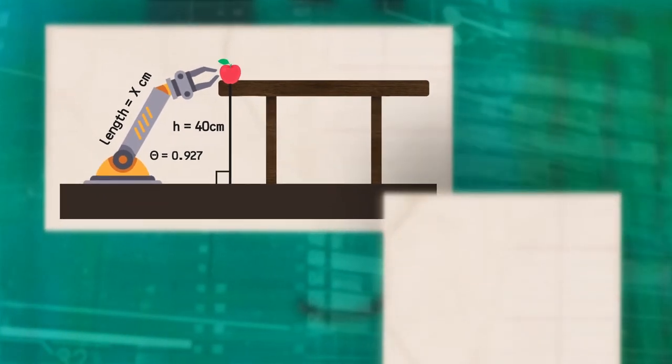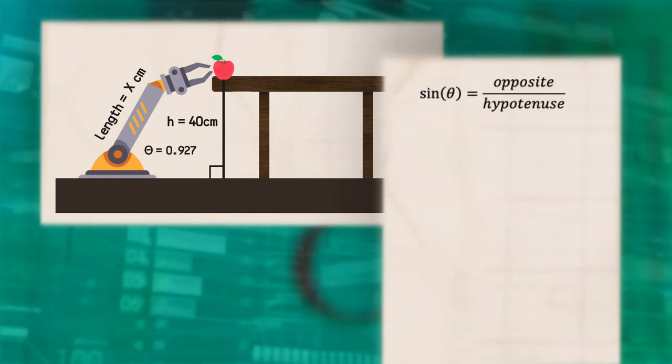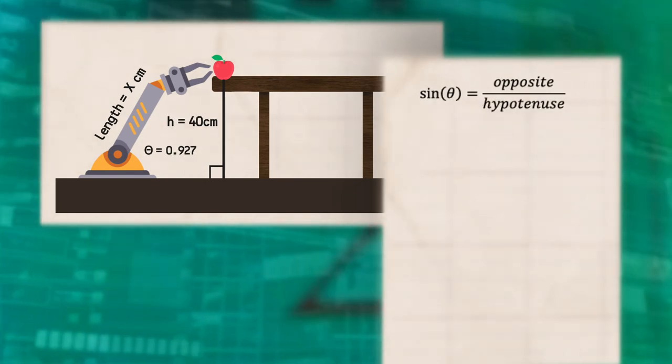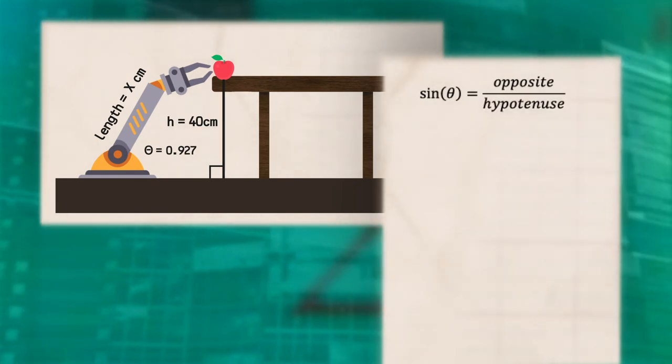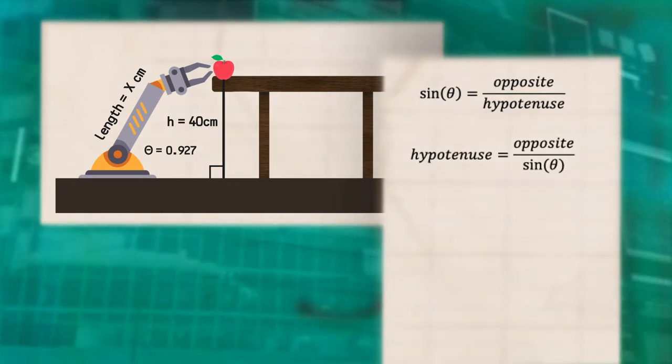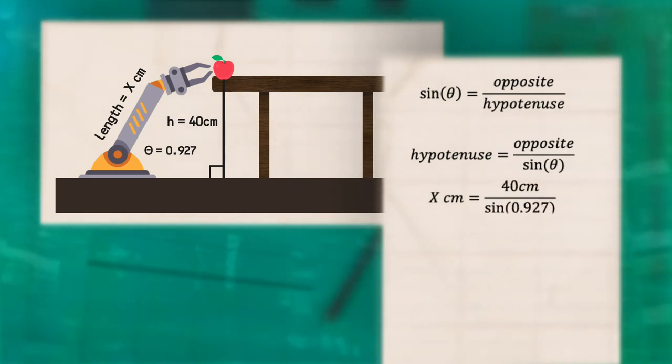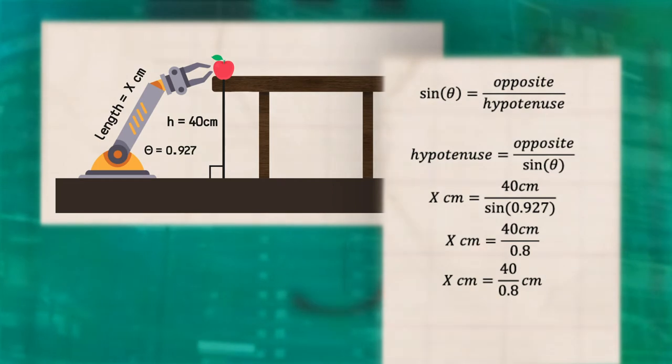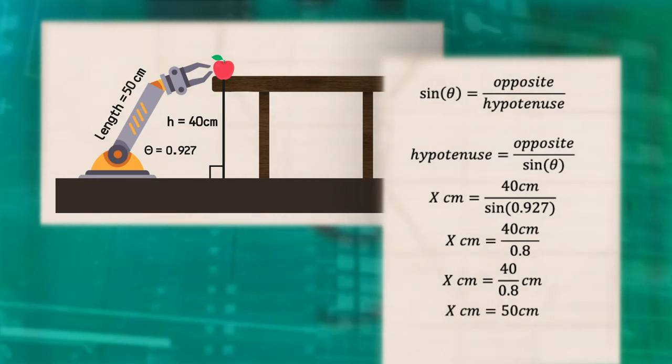From trigonometry, we know that the sine of an angle is equal to the ratio of the opposite side divided by the hypotenuse. We can rearrange this equation to find our missing hypotenuse. We substitute in the numbers we have for the opposite side, and our angle theta. The sine of 0.927 radians is equal to 0.8. We simplify, and find that x is equal to 50 centimeters.